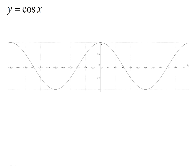Looking at the cos graph, y equals cos x: the cos of 0 degrees is positive 1, the cos of 90 degrees is 0, the cos of 180 degrees is negative 1, the cos of 270 degrees is 0, and the cos of 360 degrees is positive 1. That gives us one full cycle of the cos graph. The cos graph also has a period of 360 degrees, and since it ranges from negative 1 to positive 1, it also has an amplitude of 1.